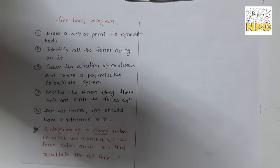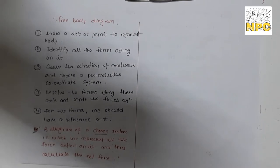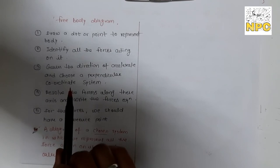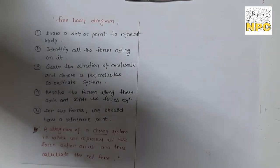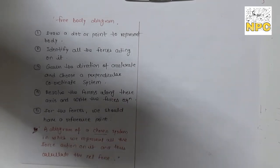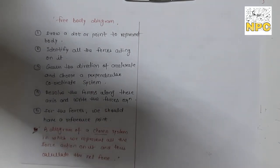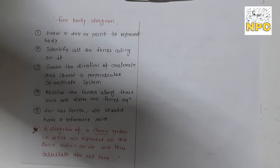To draw a free body diagram: first, represent the body as a dot or point. Then, identify all the forces acting on the body and their directions. Set up a coordinate system and resolve the forces along the axes. Finally, choose a reference frame — typically the inertial frame, meaning you observe the body from the ground.